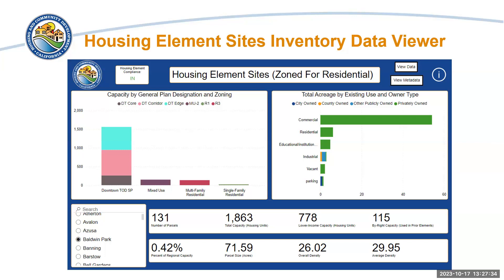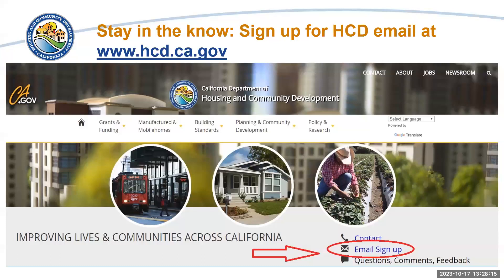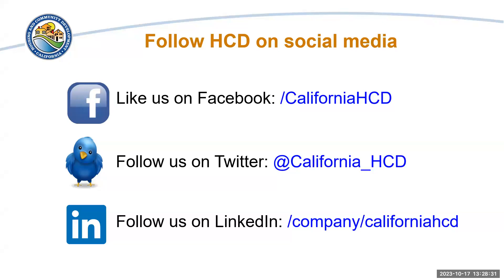I'll give you a quick preview of something we're building that will hopefully be on our website soon: a Housing Element Sites Inventory Data Viewer. All of the sites inventories submitted as part of housing element review — we are compiling data about them, including summary statistics showing capacity by general plan designations, zoning, how many units the inventory can accommodate, and some interesting statistics. That's not quite on our website yet, but hopefully within the next several weeks. If you're interested in all things HCD, you can sign up for our email listserv and follow us on social media.